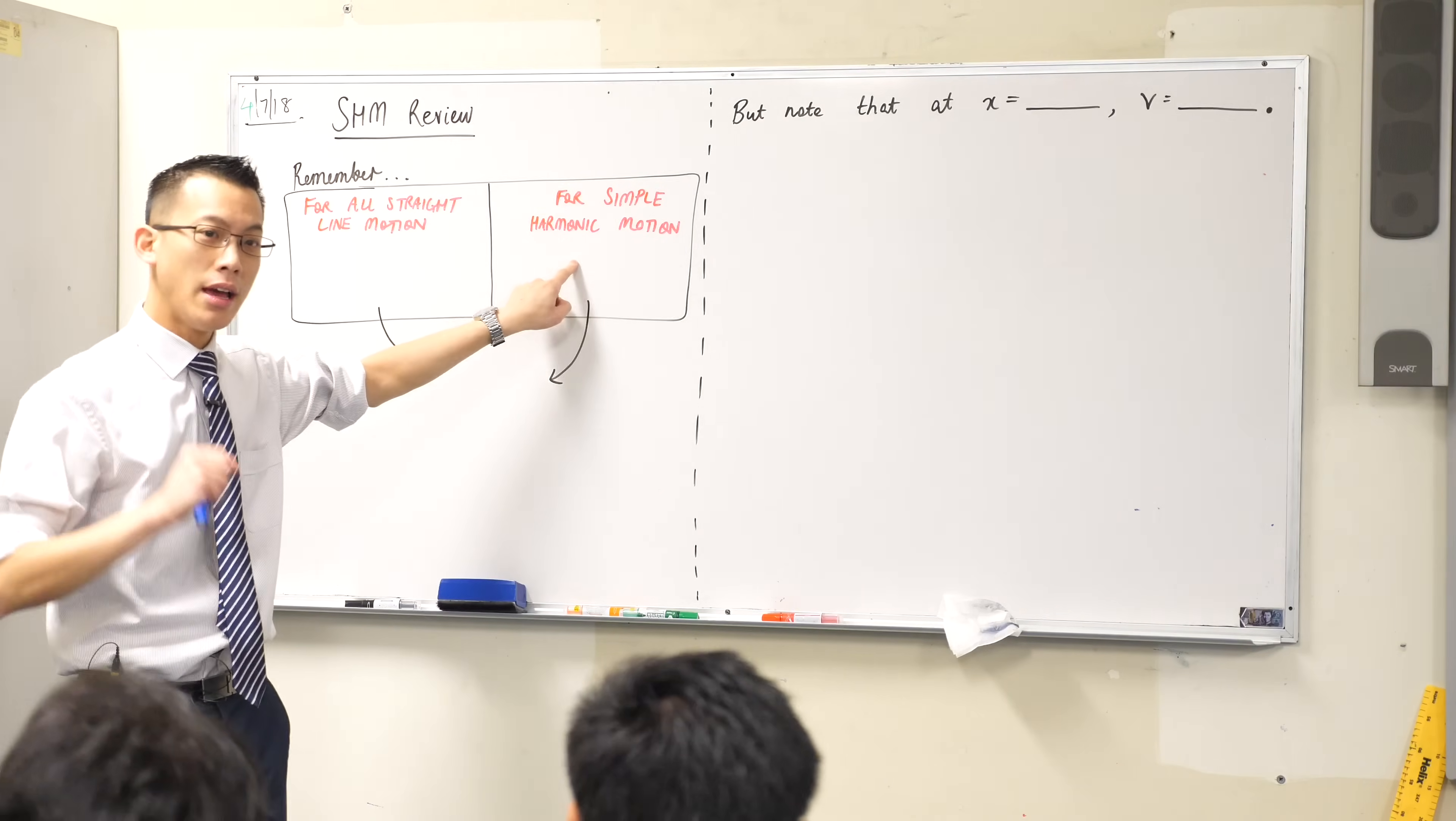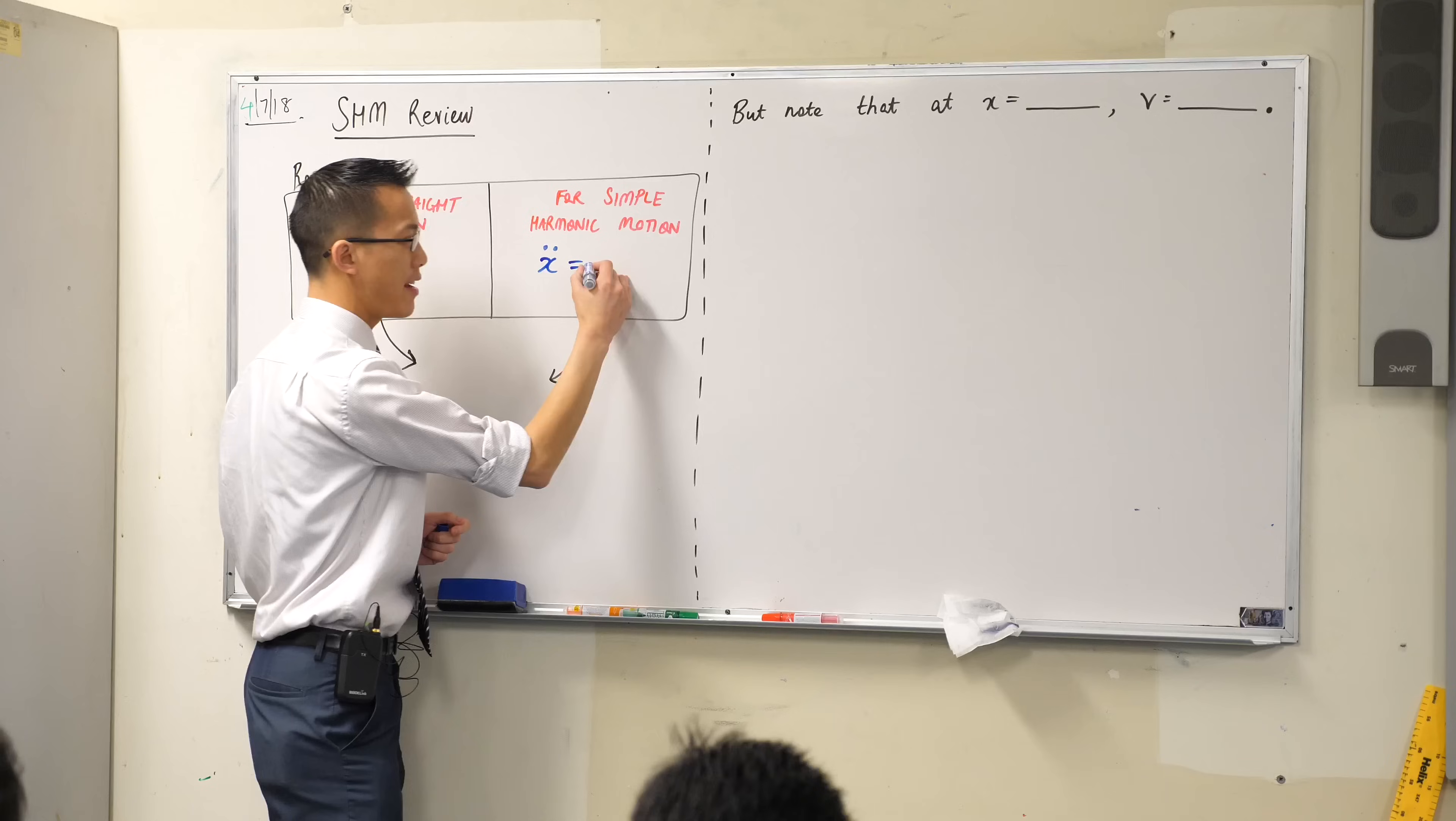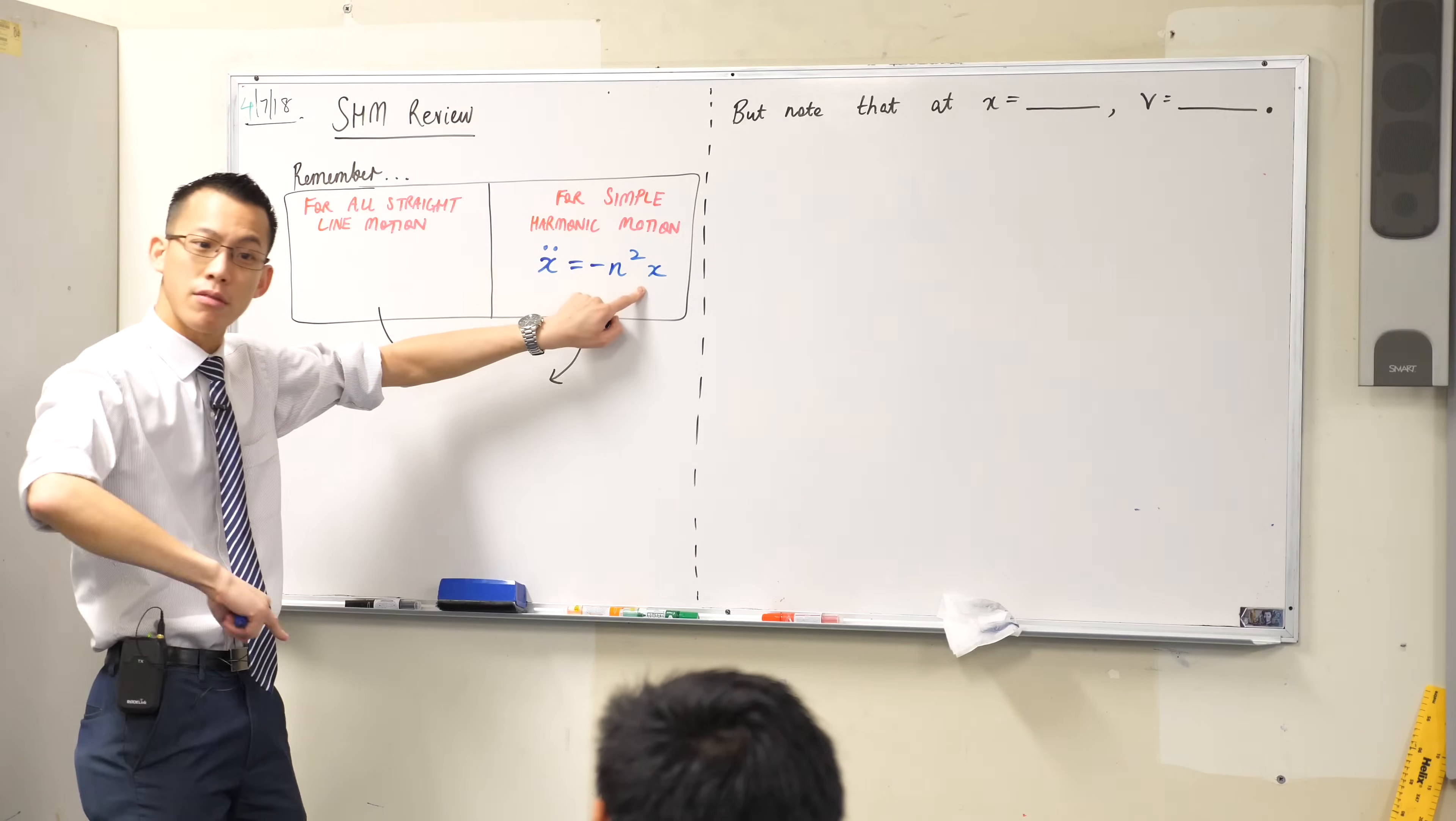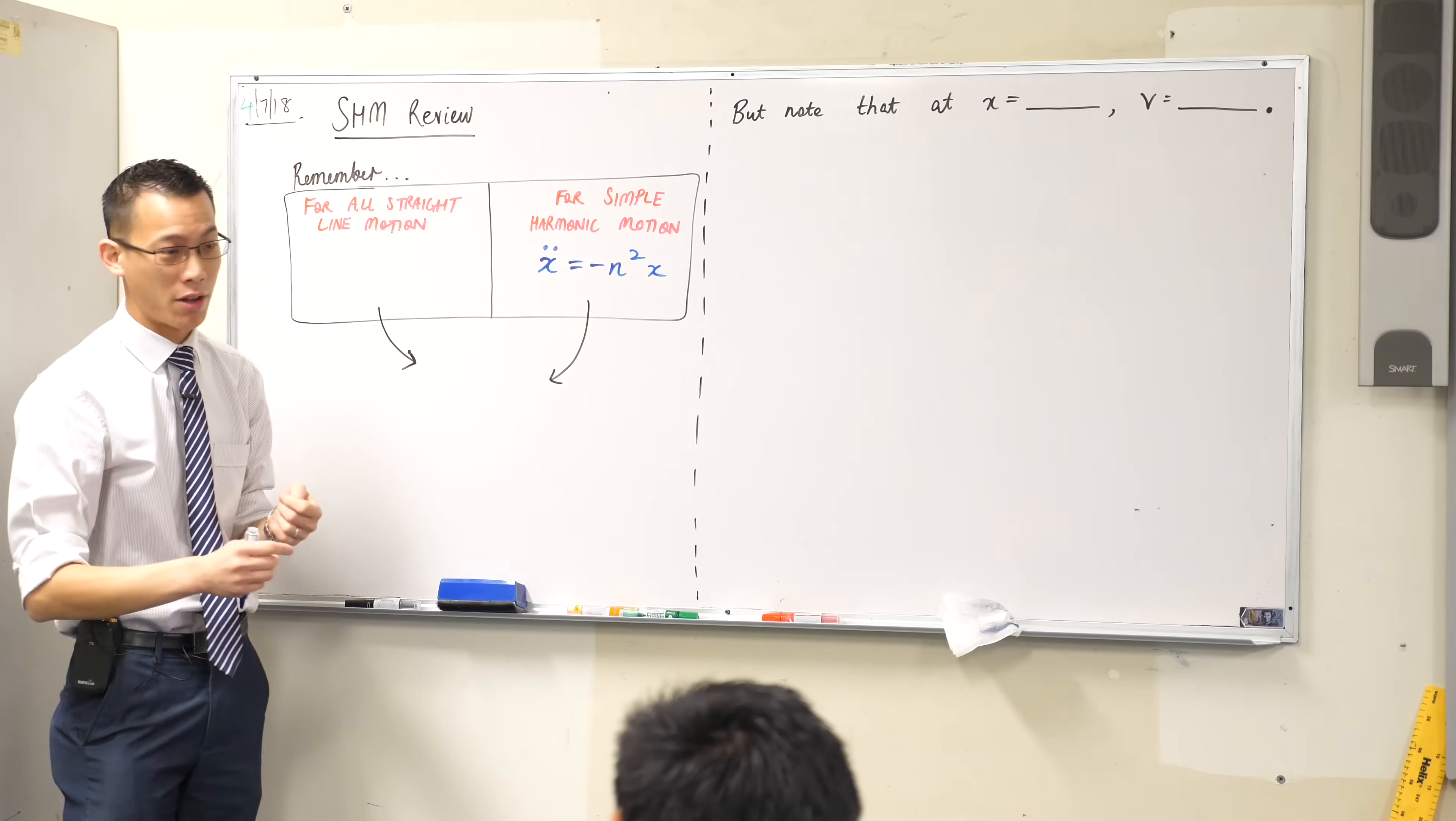When you know there's simple harmonic motion, there's a differential equation that relates acceleration to displacement. Do you remember what it was? It's a really simple equation. Yeah, negative n squared x and of course there's a minor modification to this guy. If this is going about the x equals zero, the origin, if you're not going about x equals zero, we just change this to not x but x minus b. So we'll consider that example later but this is a simple version. We know this is basic vanilla simple harmonic motion.